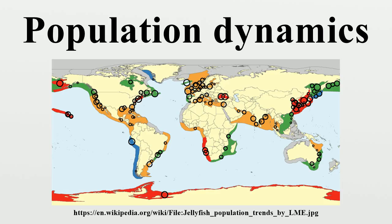The computer game SimCity and the MMORPG Ultima Online, among others, try to simulate some of these population dynamics. In the past 30 years, population dynamics has been complemented by evolutionary game theory, developed first by John Maynard Smith. Under these dynamics, evolutionary biology concepts may take a deterministic mathematical form.